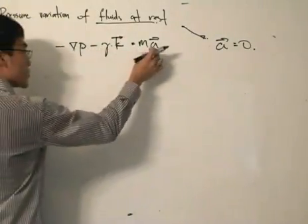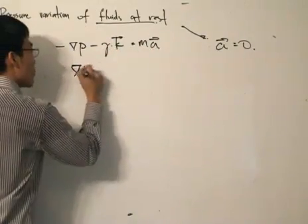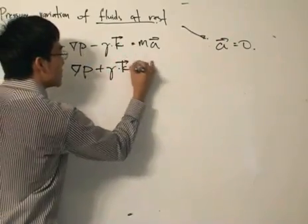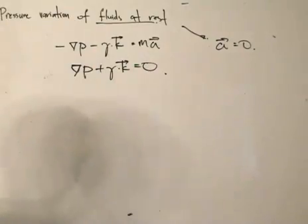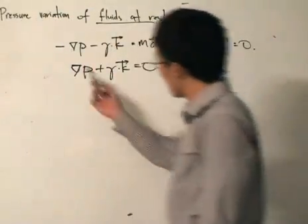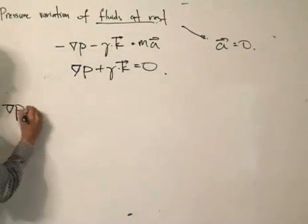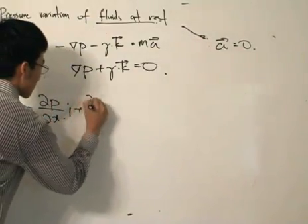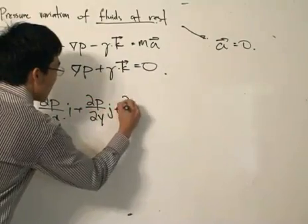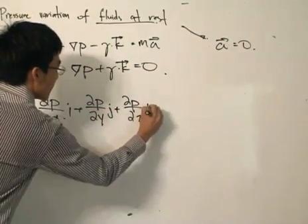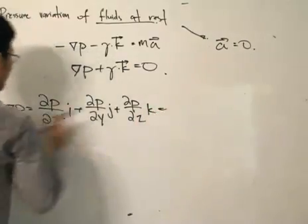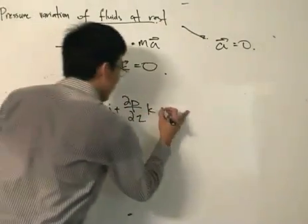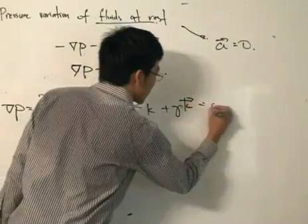This equation now becomes, setting acceleration to zero and rearranging: the gradient of p plus the specific weight in the k-component equals zero. Expanding the del-operator on pressure, we get: (∂p/∂x)î + (∂p/∂y)ĵ + (∂p/∂z)k̂ plus the specific weight in the k-component equals zero.